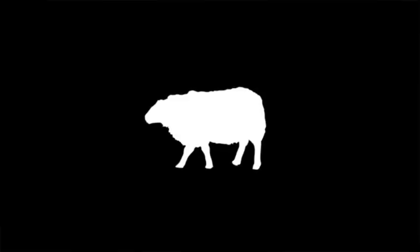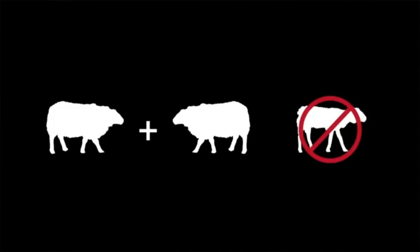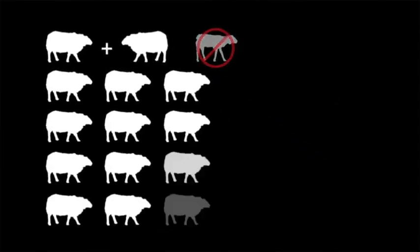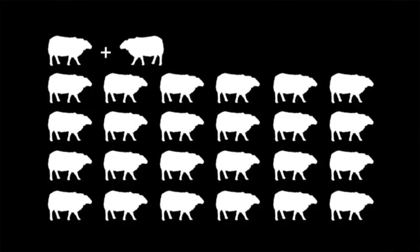Darwin knew that animal breeders can actually change species quite quickly within just a few generations. The way they do it is by choosing which individuals will breed and which won't. So if you want to breed fat sheep, you let the fat sheep breed and you don't let the thin sheep breed, and quite quickly you can really change a species. What Darwin noticed is that something very similar seems to happen in the natural world — it's almost as if nature itself selects which individuals will breed and which won't.